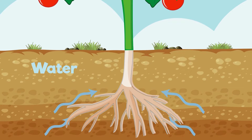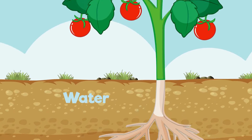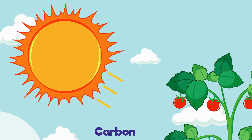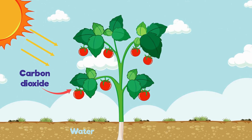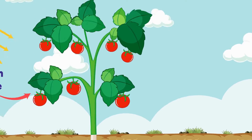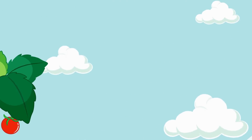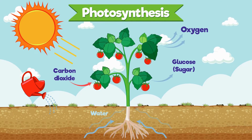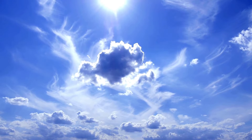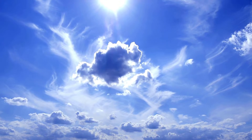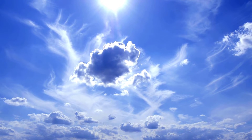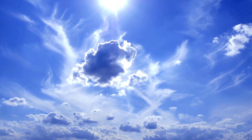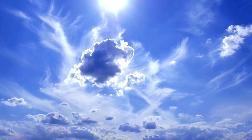Plants need air just like us. They take a gas called carbon dioxide from the air, and with sunlight they turn it into food in a process called photosynthesis. This process makes oxygen, which is what we breathe. We help plants and they help us.